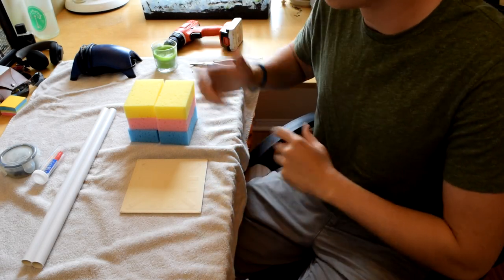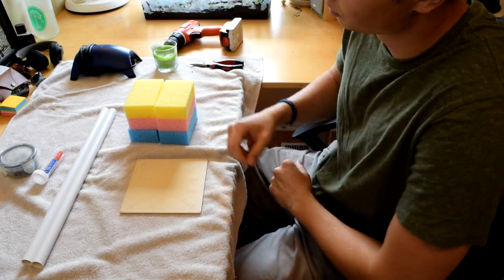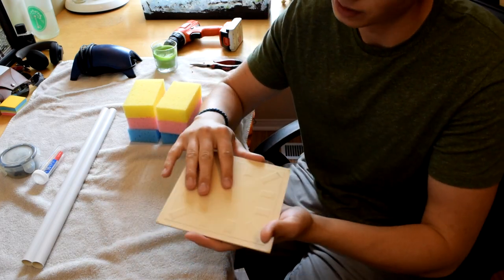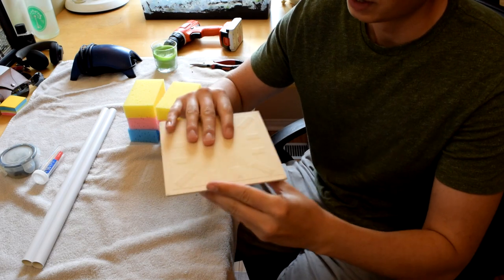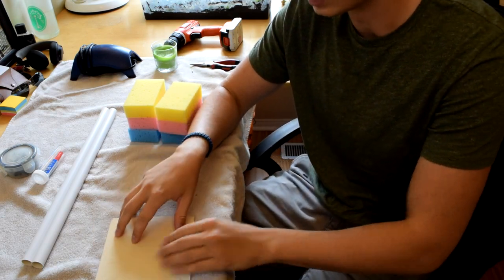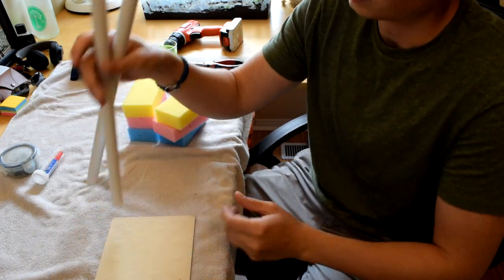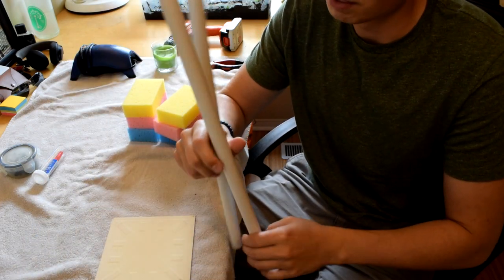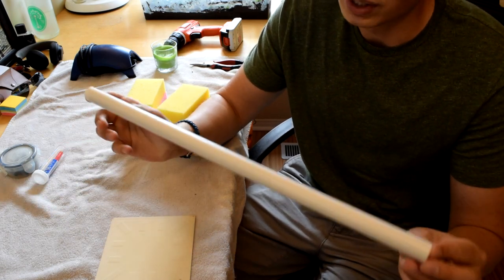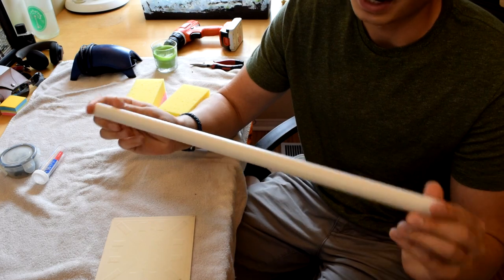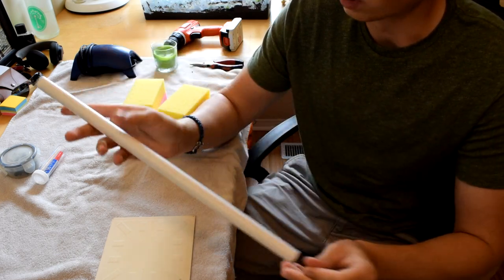All right, so before we get started I'm just going to run through all the materials we're going to be using in this project. First up, we need a base for our sponge filter. This is just an old tile. Works perfectly, it's a nice flat base. If you don't have tiles laying around, you can use a flat piece of rock. We got some plastic stand pipes here. This is actually three-quarters inch PVC pipes that you can get at any kind of Home Depot or hardware store.